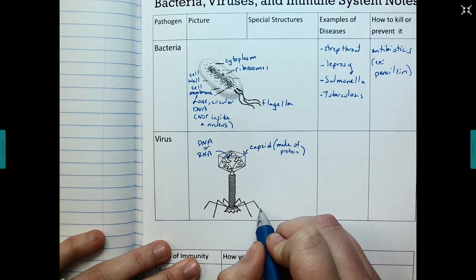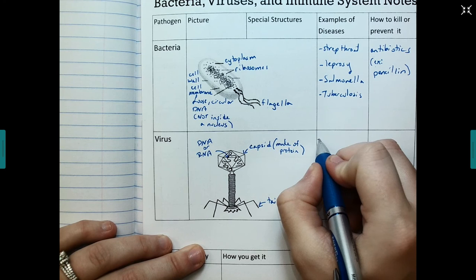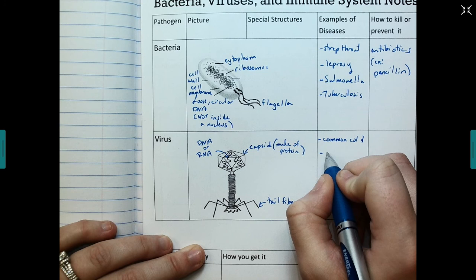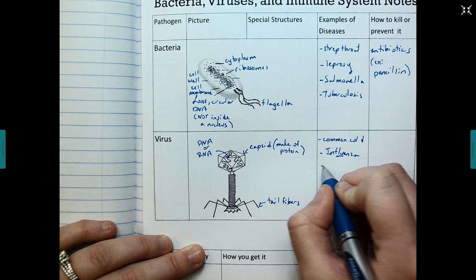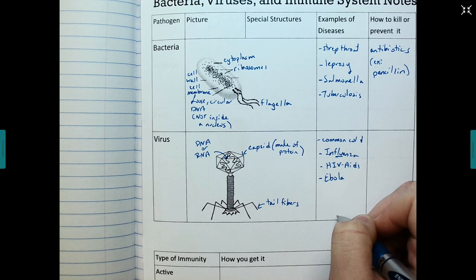And then we have the tail fibers, which help to move the virus. Some examples of viruses, we've got the common cold, influenza, or more commonly called the flu. HIV, AIDS, and of course, Ebola. And then I guess we could even include COVID-19 in this list at this point, because that is definitely a virus.